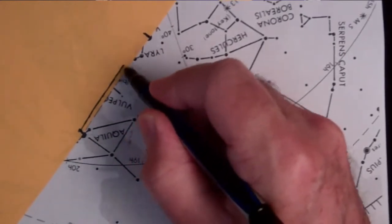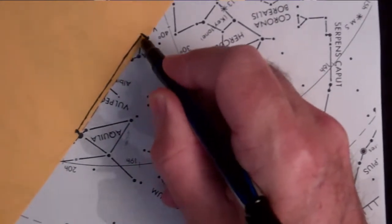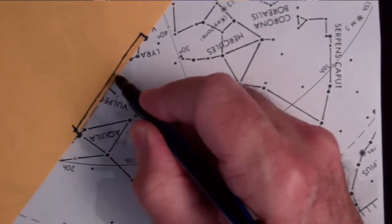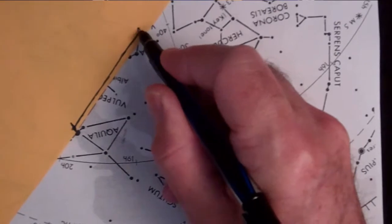Thank you very much, Mr. Hand. Alright, so that represents the angular distance from Altair in Aquila to Vega in Lyra the harp.